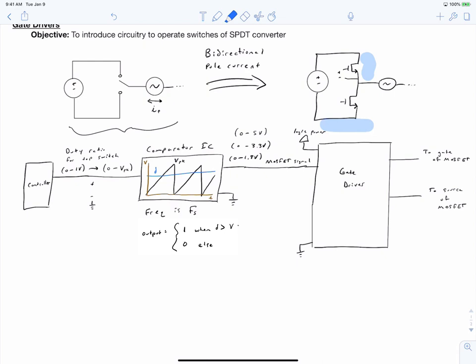Our gate driver has to be able to provide a consistent gate voltage relative to the source of the MOSFET, which means it needs to isolate the signal going to the MOSFET from the logic signal, which is always referenced to a stable logic common.